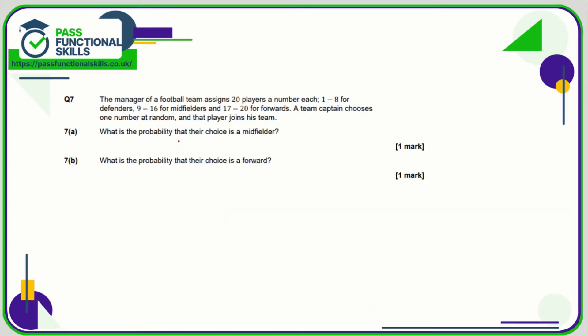Question number seven: What is the probability that the choice is a midfielder? So there are 20 players. Out of the 20, how many are midfielders? It was 9 to 16. So that's 9, 10, 11, 12, 13, 14, 15, and 16.